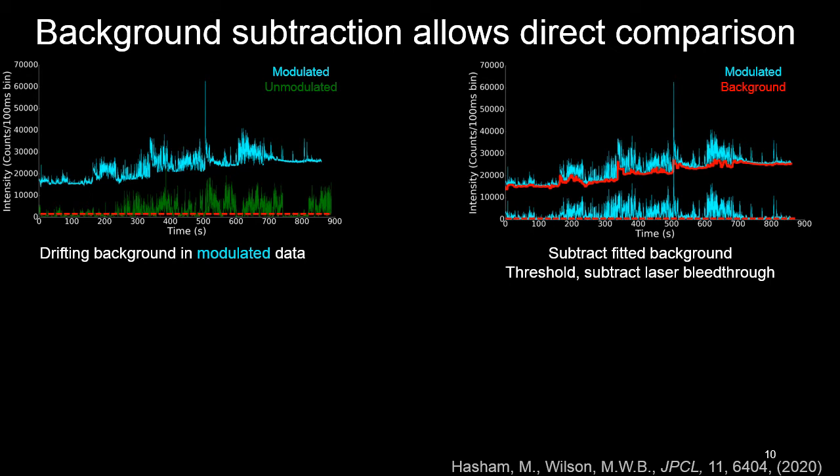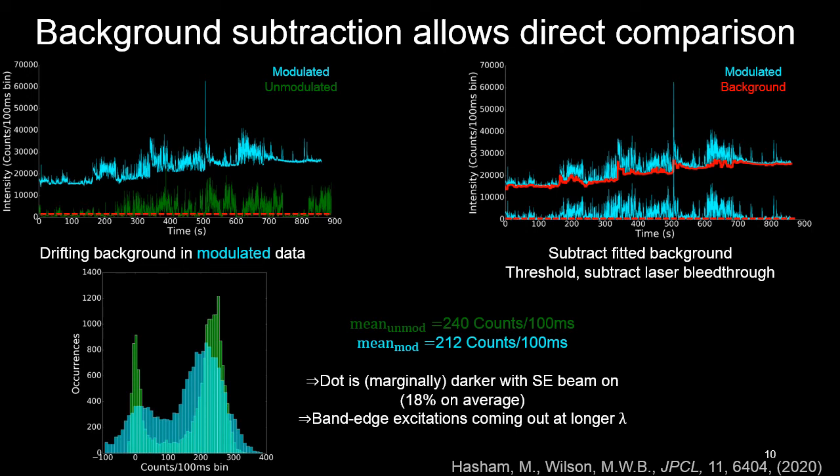Here you can see in red our algorithm tracking the drifting background, which is then subtracted off to give us the trace below. We get a nice flat trace, and evidence for this working is that when we regenerate the histograms of the intensity distributions, you can see that the bimodality is still there. To really be able to compare properly, what we decided to do is subtract off all of the off counts such that the intensities are centered about zero. We did this because we figured when the dot is off, the majority of the photons we're seeing is laser bleed through and doesn't really comment on the photophysics of the dot. After this subtraction, what we find is that the dot is a little bit darker, giving us less photons when the modulation is on, which is evidence for us being able to deplete the band edge carriers.